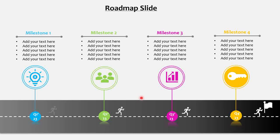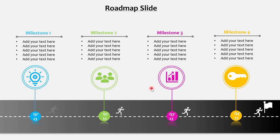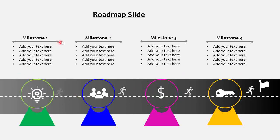Hello friends, welcome. In today's video we are going to see how we create a roadmap slide. Here we can see we have a road and we are representing it in the form of quarters — quarter one, two, three, and four. You can also put months or years. We are showing here the milestones one, two, three, and four. For this video I have put four milestones, but you can add or remove — you can have three or five — the spacing can be adjusted.